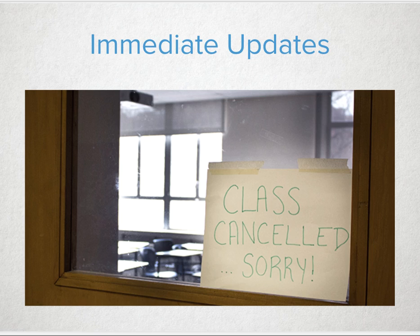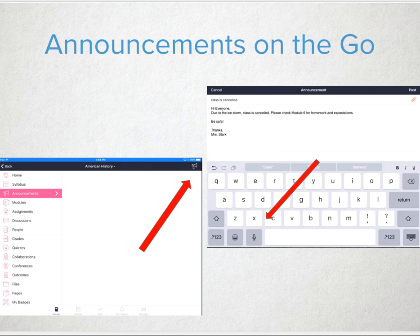Immediate updates are another great way to utilize Canvas announcements. Did you get hit by that major snowstorm on the east coast or the ice storm in the Pacific Northwest? Let students know immediately that there's a delayed start and they can access their activities while at home. You can create announcements on the go as well. Did you forget to let everyone know you're meeting in the library today instead of the classroom? Send an announcement from the mobile app.